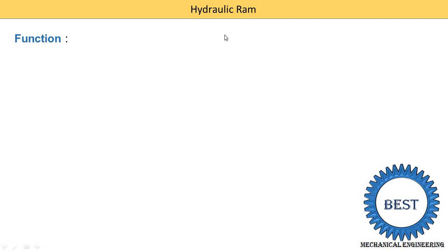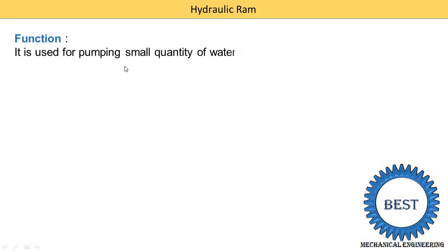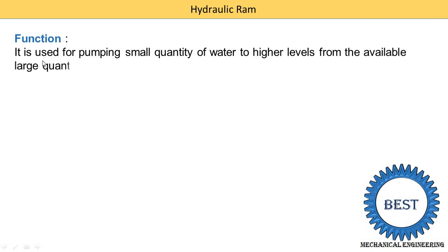At home, we use a pump for transferring water from the ground floor to the water tank located on the terrace, and in that pump we are supplying electricity. But in the hydraulic ram, we do not require any electricity. So for that, we have a constraint on the quantity of water. Here I have written the proper function of a hydraulic ram — it is used for pumping a small quantity of water to a higher level.